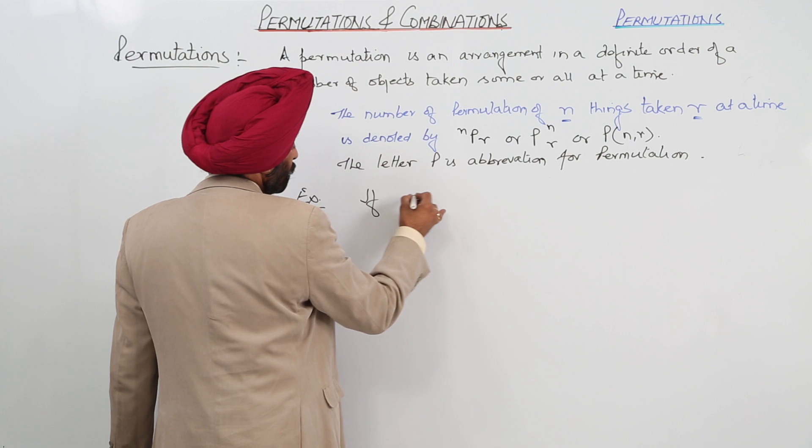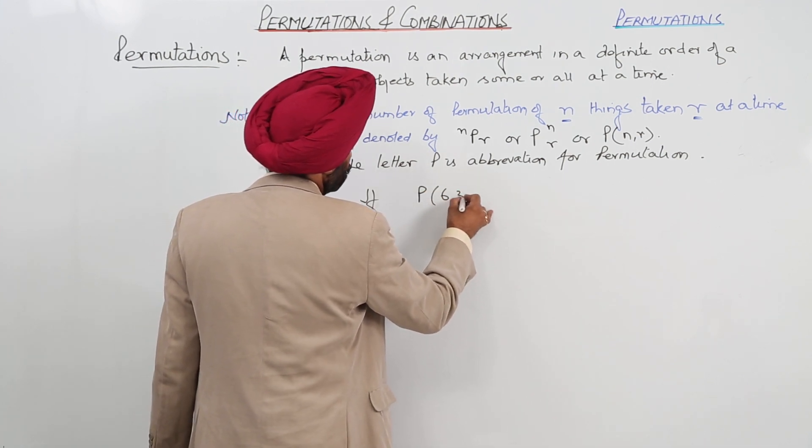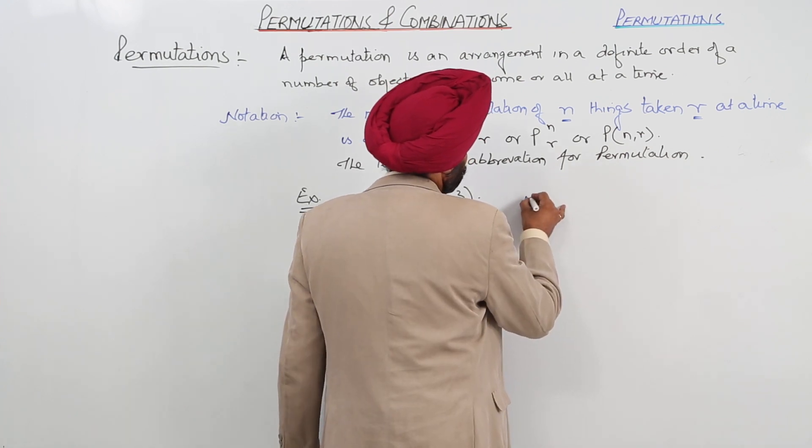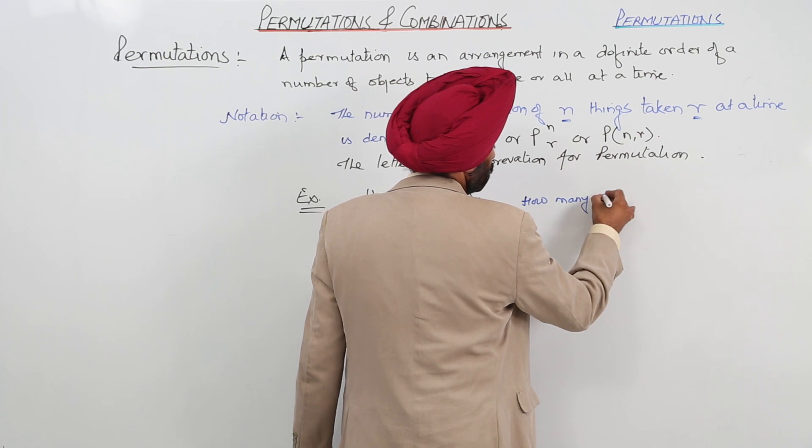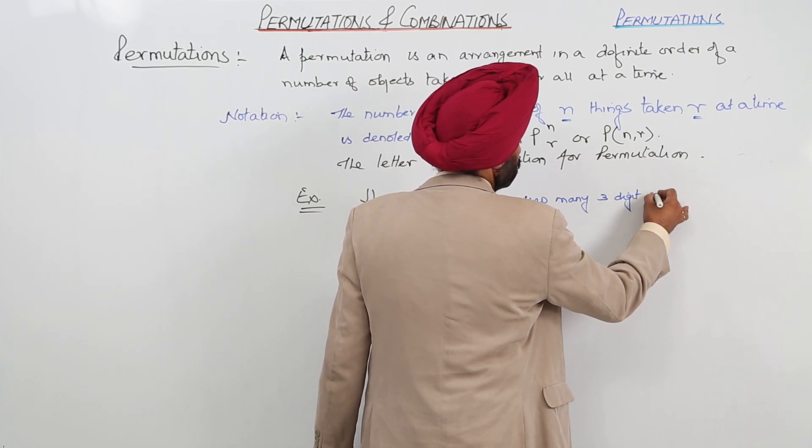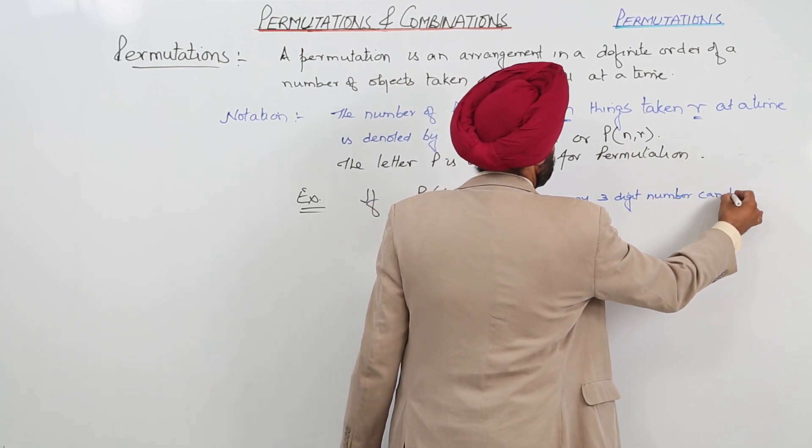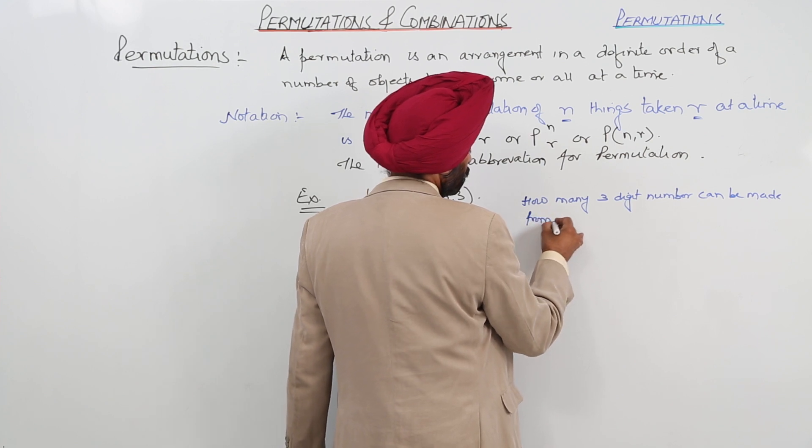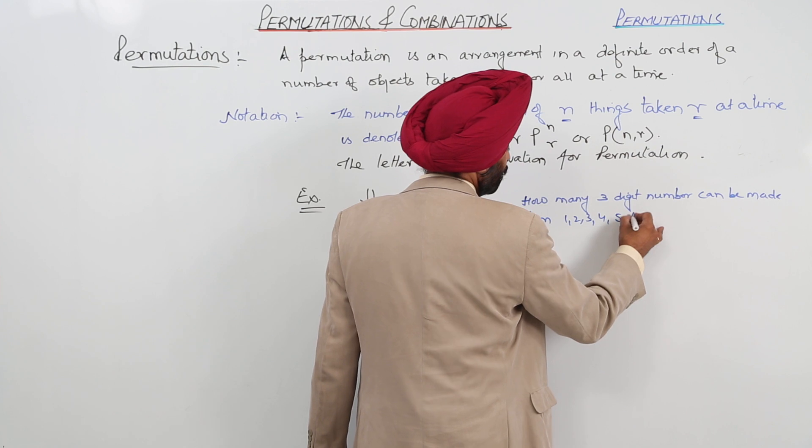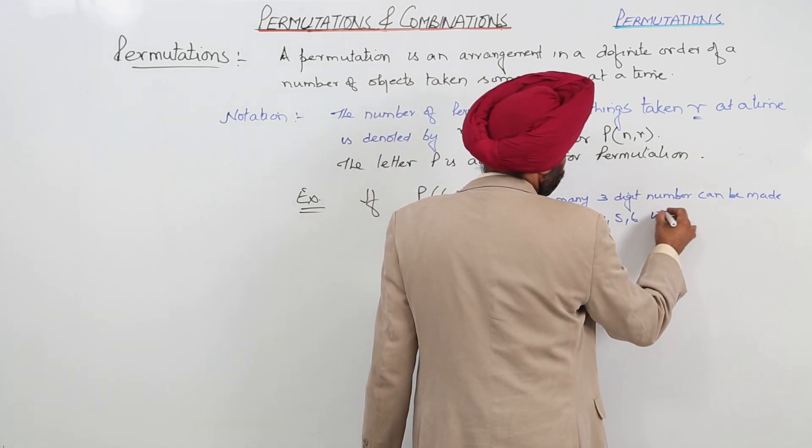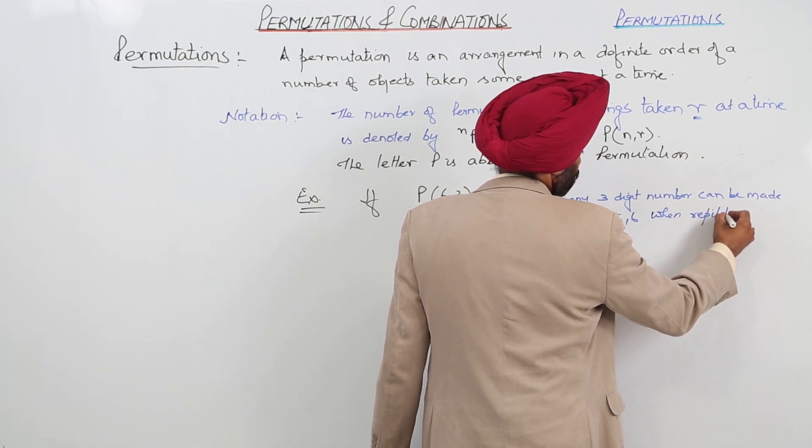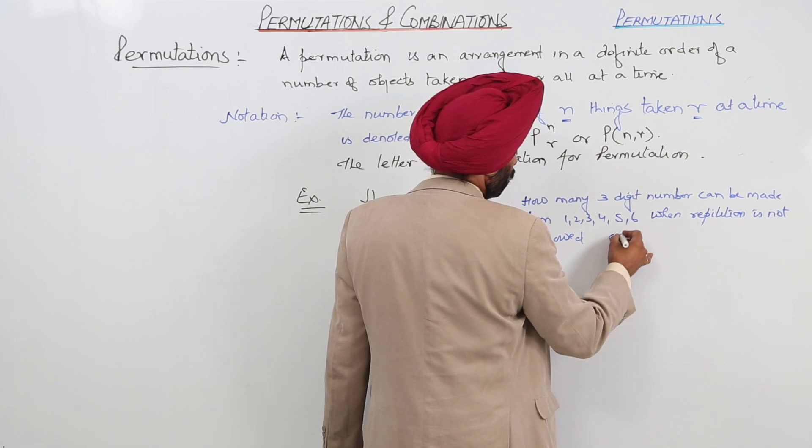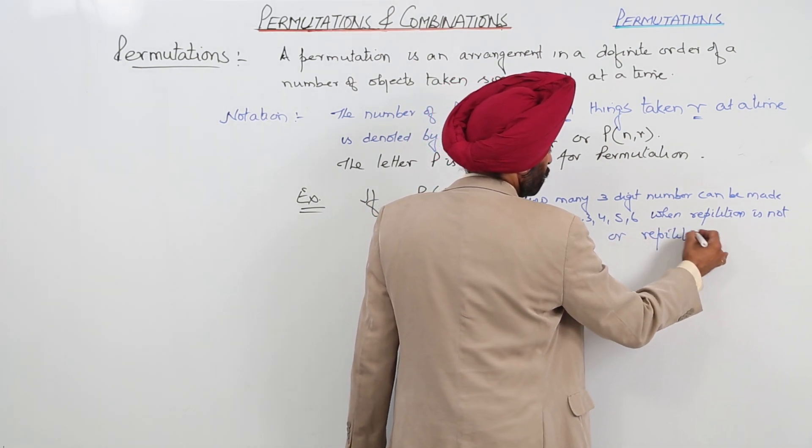So now example, if I have written P(6,3). Now what the example is, how many three-digit numbers can be made? This we have already done it, this type of examples. Can be made from 1, 2, 3, 4, 5 and 6, when repetition is not allowed or repetition is allowed.